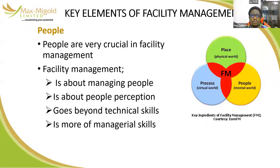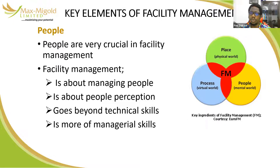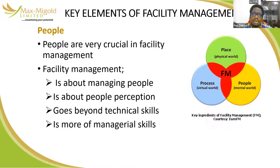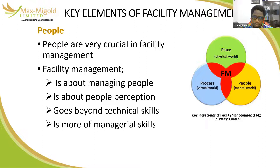The key elements of FM are people, place, process, and technology. People: we are providers of spaces and services, health and well-being, and enablers of people's productivity. Organizations are made up of people, so we are not just managing those on our team delivering services — we are also managing the people we serve, starting from managing their perceptions and expectations, so we set the right tone and deliver to meet their requirements.